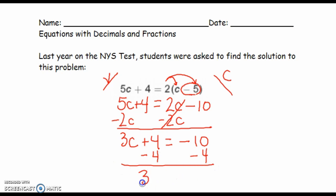Now I have 3c equals negative 14. When I divide each side by 3, I get c equals negative 14 thirds. It's not pretty, but it works. Make sure you have this. I'm going to scroll down.